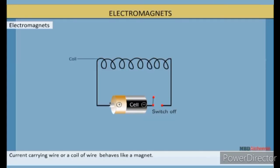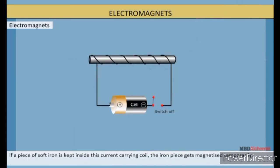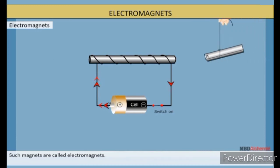Electromagnets: Current-carrying wire or a coil of wire behaves like a magnet. If a permanent magnet is brought near the coil, one end of the coil gets attracted and the other end gets repelled. This shows the opposite polarity of the coil. If a piece of soft iron is kept inside this current-carrying coil, the iron piece gets magnetized temporarily. Such magnets are called electromagnets.